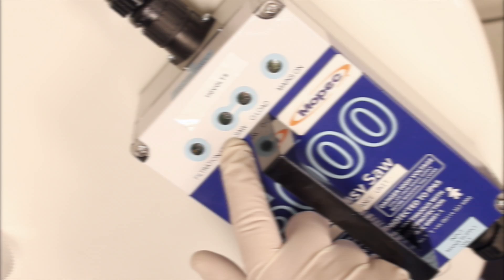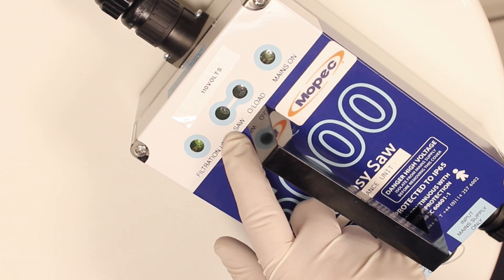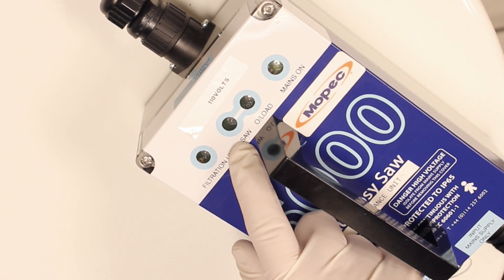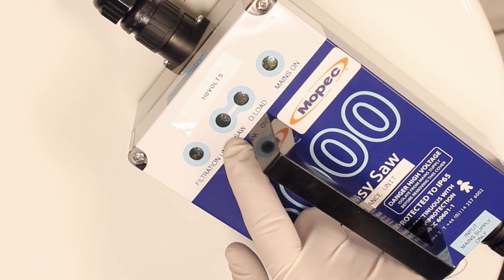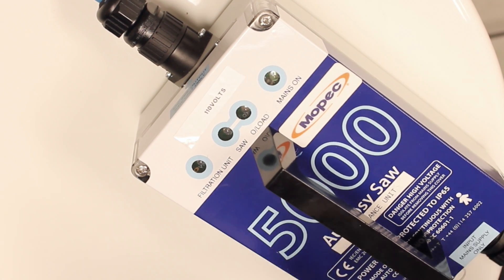The Mopec 5000 unit is connected to a portable power supply. If the saw is operating, the green indicator light will turn on with the filtration unit light. The filtration light shows that the power for an autopsy saw vacuum is available. The main power light will light up when your power unit is on.